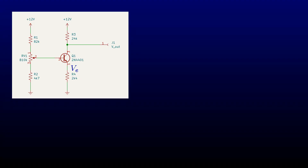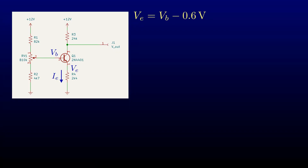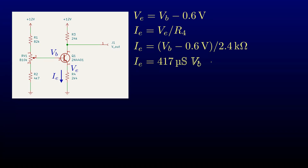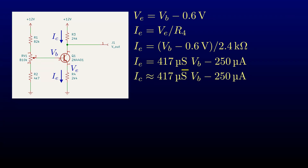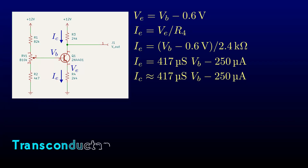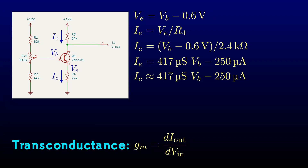The emitter voltage V sub E will be one diode drop below the base voltage V sub B. The emitter current I sub E is the emitter voltage divided by the emitter resistor. The collector current I sub C is approximately equal to the emitter current. This constant of proportionality, which applies to a voltage-controlled current source, is called the transconductance. It's the rate of change in output current with respect to input voltage, measured in Siemens, which are the reciprocal of ohms.